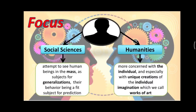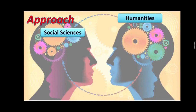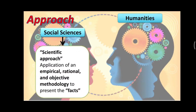Remember that we do not focus on the individual alone — we focus on the works of art of that particular individual. In terms of approach, in social sciences it utilizes a scientific approach. It is the application of an empirical, rational, and objective methodology to present the facts. Therefore, social science is really a science — it is objective. We use objective methodology based on hypothesis, research, and conclusion. We use our empirical evidences to present facts.